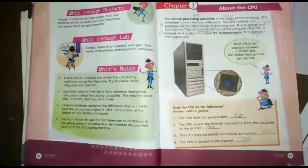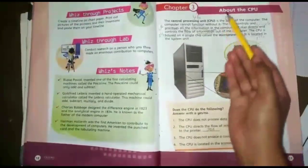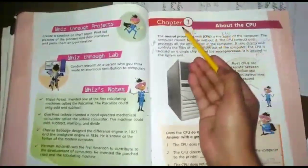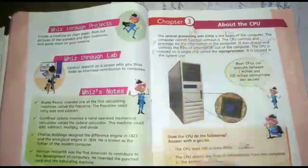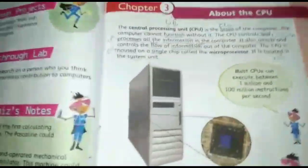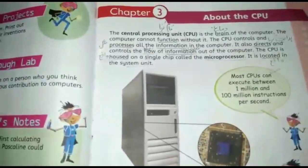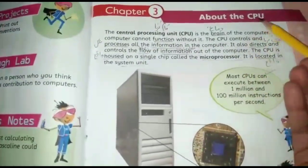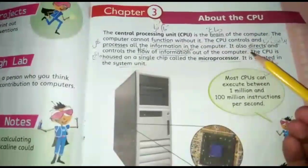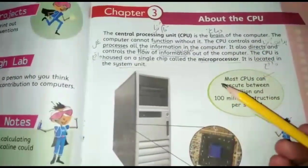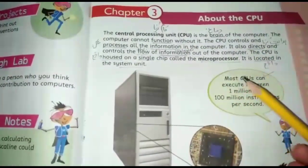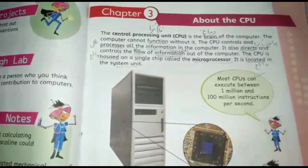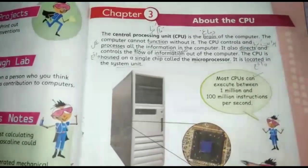We will start a new chapter on page 19 about the CPU, unit number 3. What is the CPU, what are its functions, where is it, why is it used — we will study this chapter. How many components does it have?